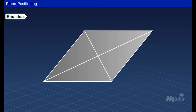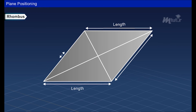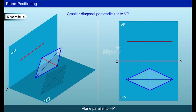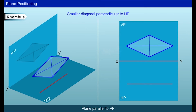A rhombus is a quadrilateral with all sides equal in length, and it has two diagonals bisecting each other at right angles. When the rhombus has its smaller diagonal perpendicular to VP, it can be drawn as shown. The rhombus with its smaller diagonal perpendicular to HP can also be drawn as shown.